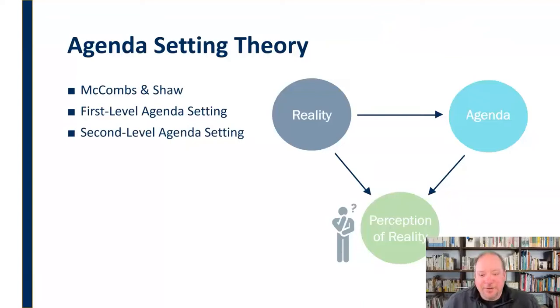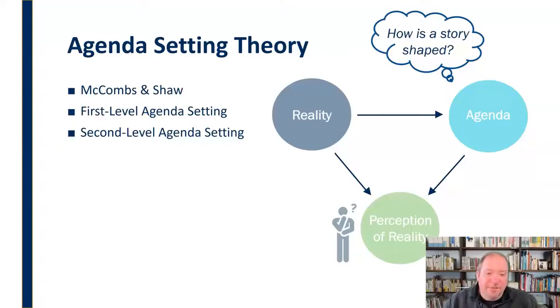Then there's also the second level of agenda setting. After we determine which stories are getting told, that person or organization is able to identify how is the story going to be shaped, what details are we going to provide, what language are we going to use in describing that story and situation? The organization or individual then shapes the story through the second level of agenda setting.